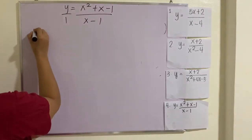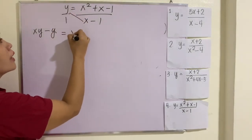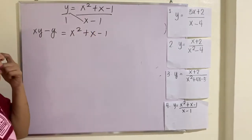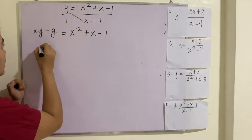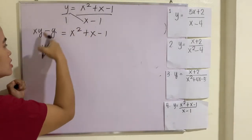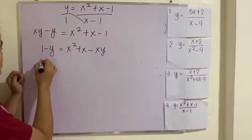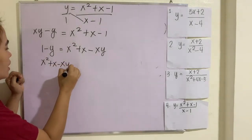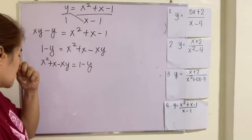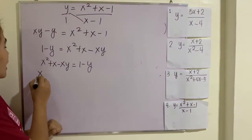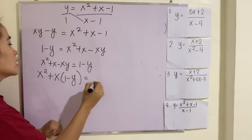Solve for x by cross multiplication: xy minus y equals x squared plus x minus 1. Rearranging, putting x terms on one side and non-x terms on the other: x squared plus x minus xy equals 1 minus y. Using the symmetrical property of equations, we isolate x by factoring out x, giving 1 minus y equals 1 minus y on the right side.